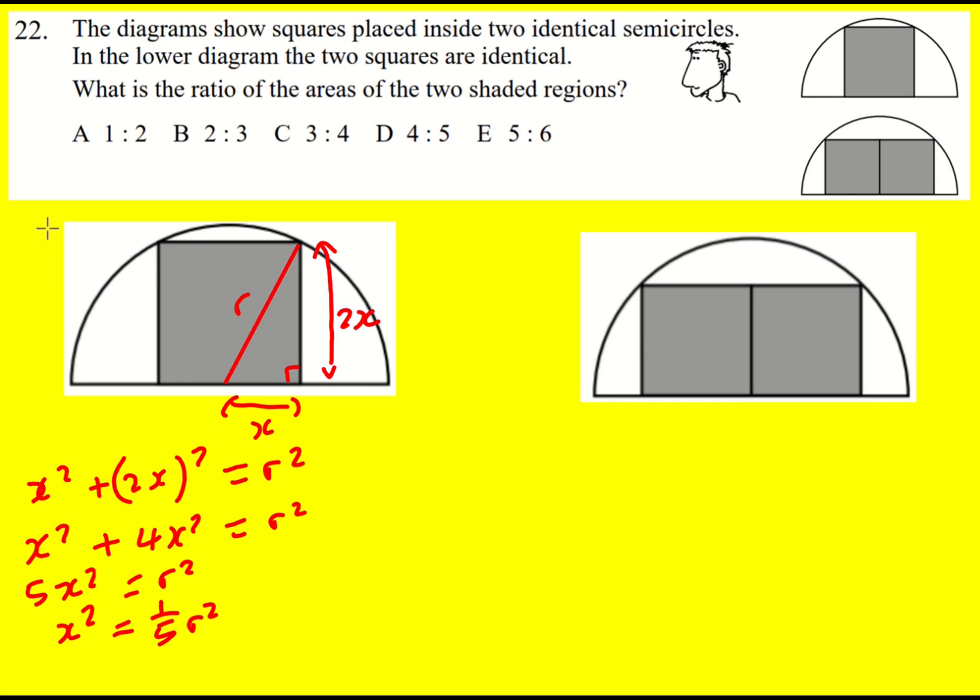Now just note, we actually want the area of the square which is going to be 2x squared or 4x squared like this, so in fact my shaded area is 4x squared, it's 4 fifths r squared. Good.